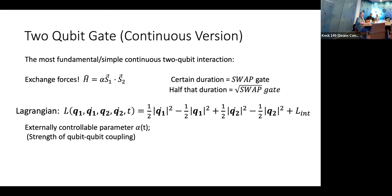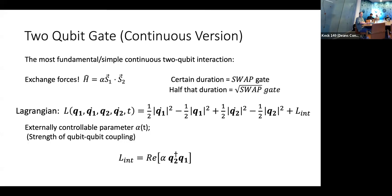I want to couple two qubits together — Q1 and Q2 — and they need some interaction Lagrangian. My controllable parameter is just a scalar: the strength of my coupling alpha. I can turn it on and off by bringing the qubits together. What's the very simplest possible interaction Lagrangian you could dream up? It's got to have Q2 in it, Q1 in it, and alpha in it, and it's got to be real because it's a Lagrangian. And this works. The very simplest thing you can come up with actually works.